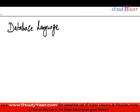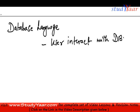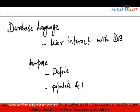Next we will study the concept of database languages. Just like a normal language allows two or more people to interact with each other, a database language allows a user to interact with the database. The basic purpose of a database language has two purposes: one is to define the database, and another is to populate and manipulate the database.